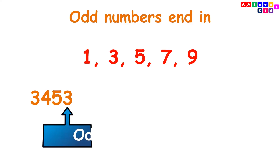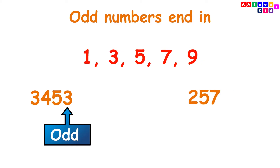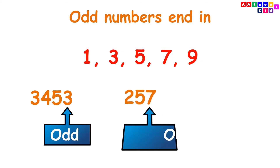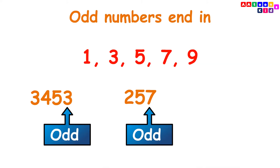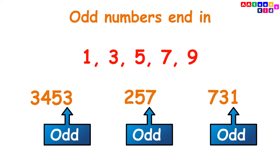3453 is an odd number because the last digit of the number is 3, and 3 is an odd number. 257 is an odd number because the last digit of the number is 7, and 7 is an odd number. 7331 is an odd number because the last digit of the number is 1, and 1 is an odd number.